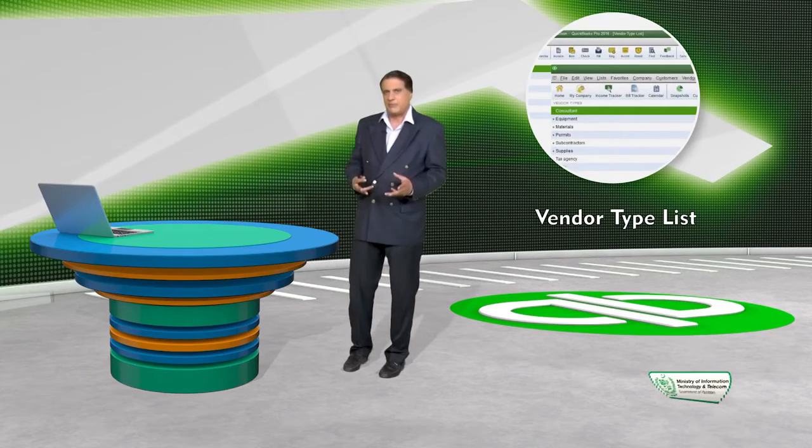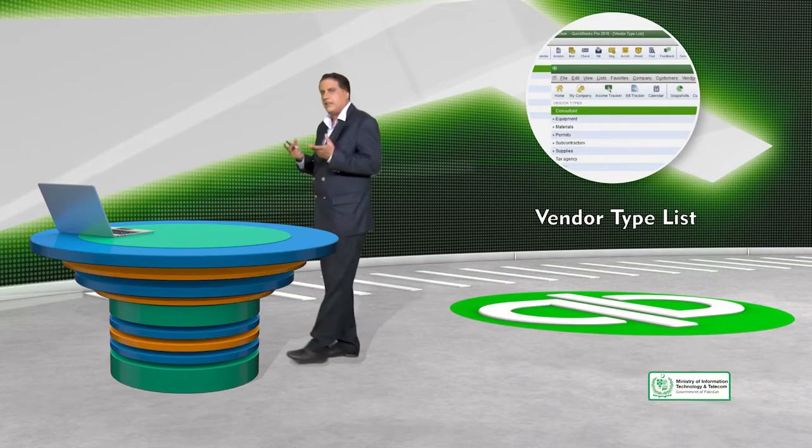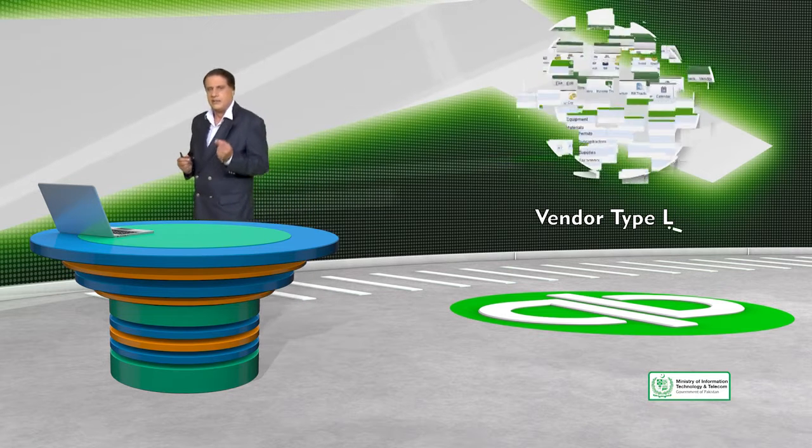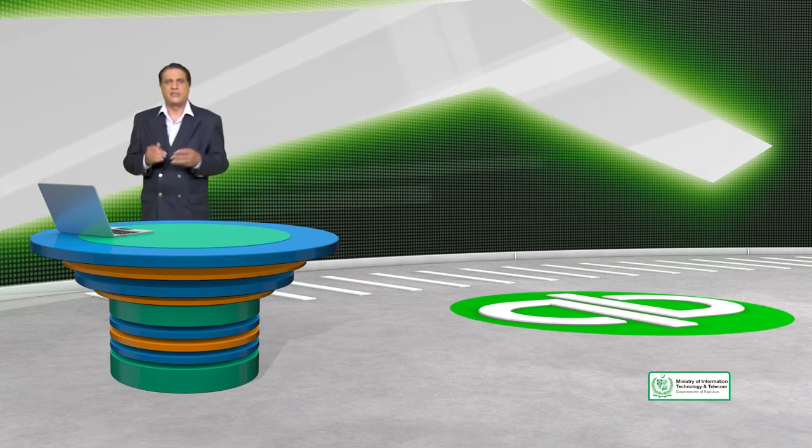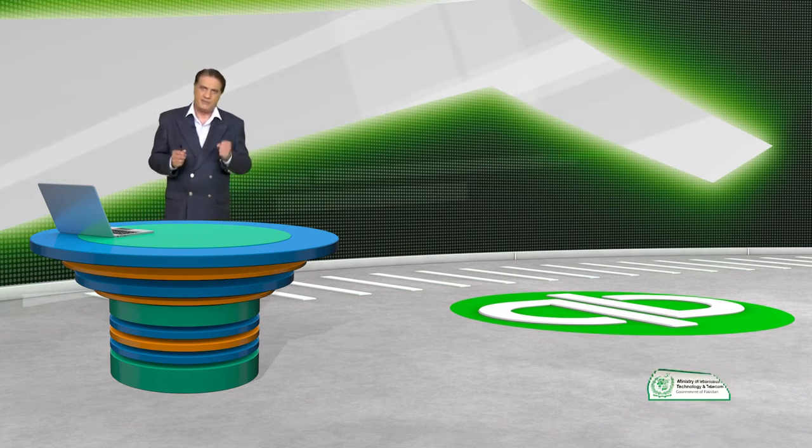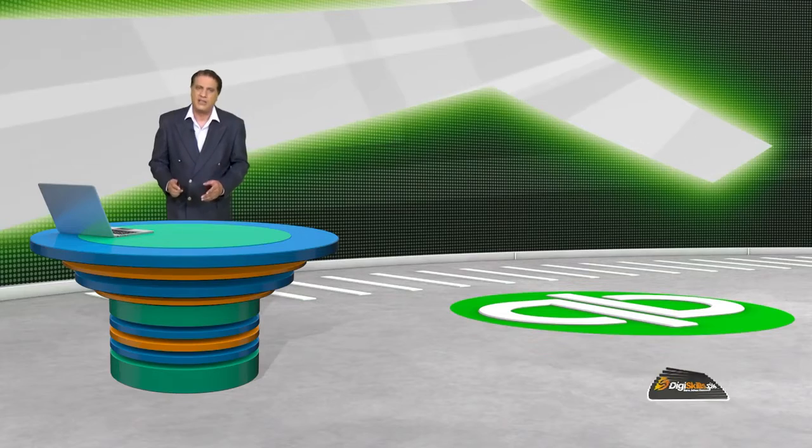Isi tarah Vendor Type List — vendor list mein hum yeh dekhte hain ki humara kis type ka vendor hai. Isme bahut saari chizen ho sakti hain: kya yeh humara supplier hai, kya yeh humara service provider hai? Supplier koi material bhejta hai humein, service provider koi service deta hai humein. Isme yeh bhi ho sakta hai ki location-wise bhi hum vendor ko alag alag is list mein daalein — yeh hamare ek sube ke vendors hain, yeh hamare doosre sube ke vendors hain. Is tariqe se aap kisi bhi cheez ki type define kar sakte hain within a vendor.